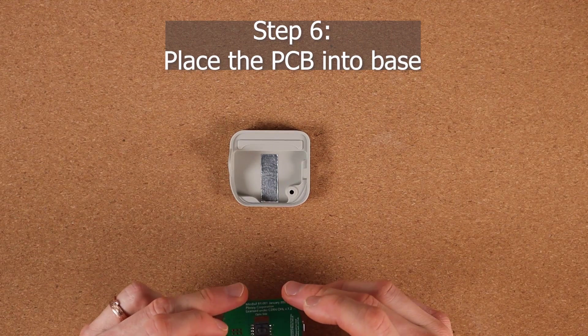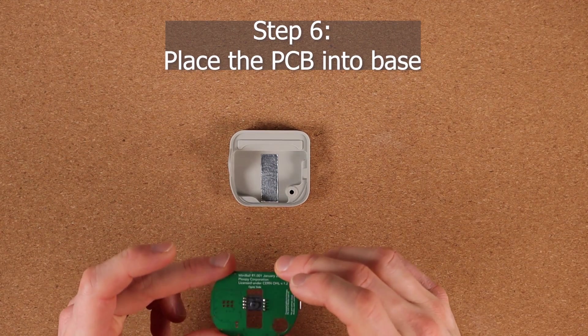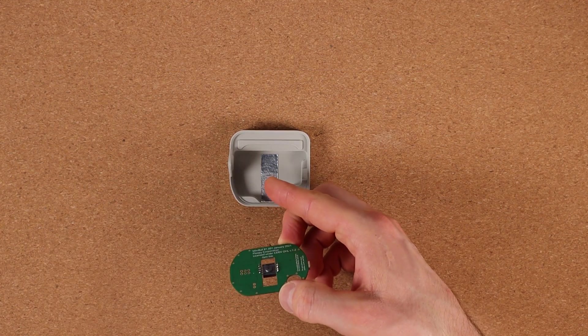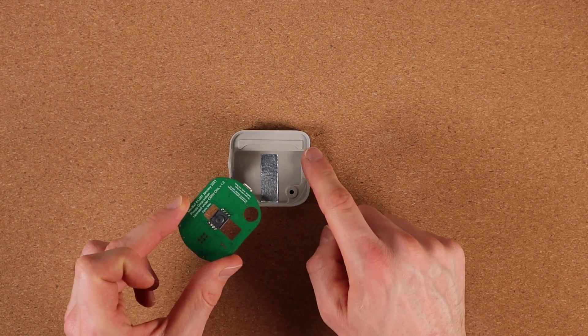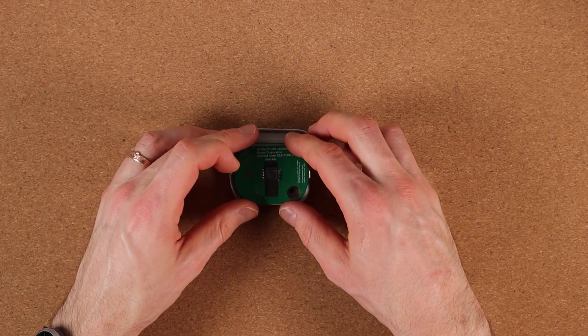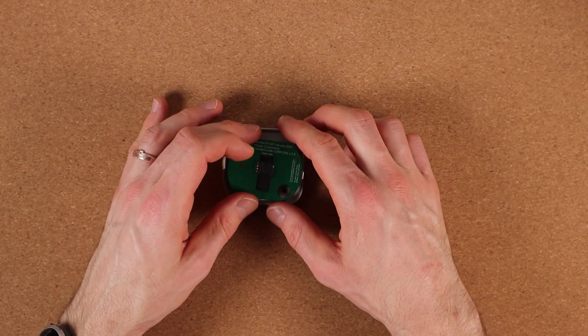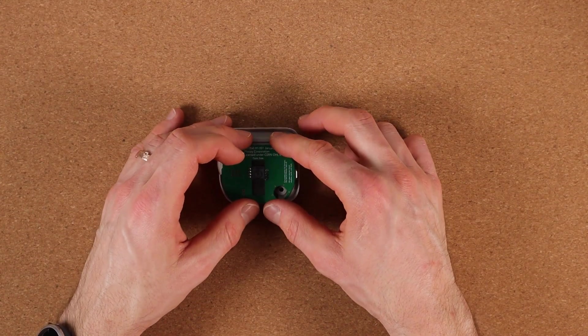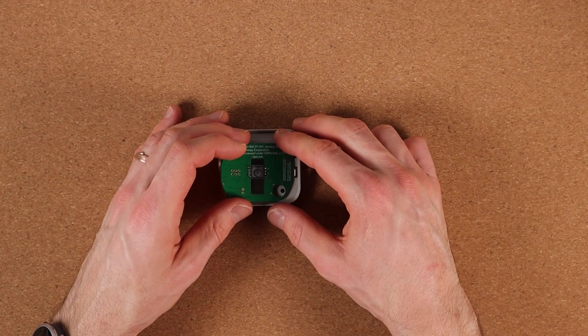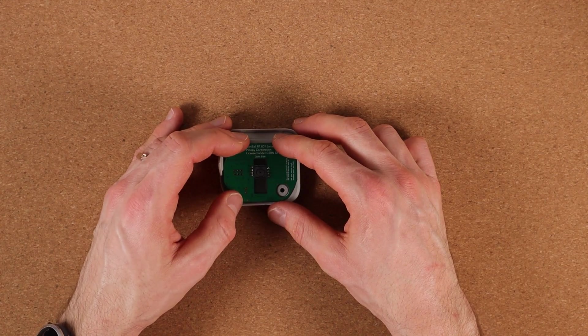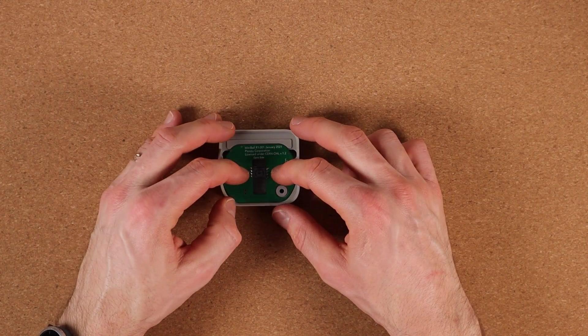Step six is to place the PCB with the sensor into the base. So you see there's a little hole here that goes right there. As I'm putting it in, I've noticed this USB connector sort of gets caught on the edge. So you have to put the USB side in first, and then it just falls right in like that.